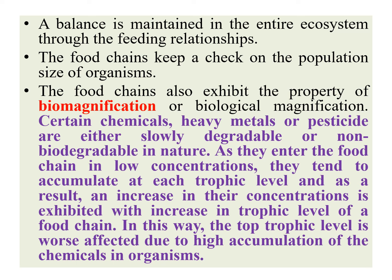Food webs also exhibit the property of biomagnification. Biomagnification is the increase in the concentration of pollutants at each trophic level. These pollutants could be chemicals, heavy metals, or pesticides, which are either slowly degradable or non-degradable. As they enter the food chain in low concentrations, they tend to accumulate at each trophic level, and thus their concentration increases with increasing trophic level. That is how the topmost trophic levels are the worst affected due to the high accumulation of chemicals.